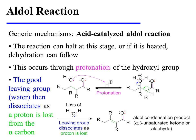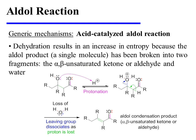The reaction can halt at this stage. Or, if it is heated, dehydration can follow. Dehydration occurs through protonation of the hydroxyl group. The good leaving group, water, then dissociates as a proton is lost from the alpha-carbon. This results in the formation of the alpha-beta unsaturation. The dehydration results in an increase in entropy because the original aldol product, a single molecule, has been broken into two fragments: the alpha-beta unsaturated ketone or aldehyde, and water.